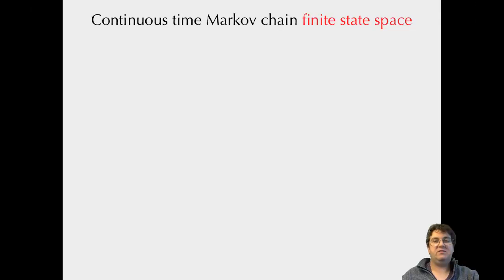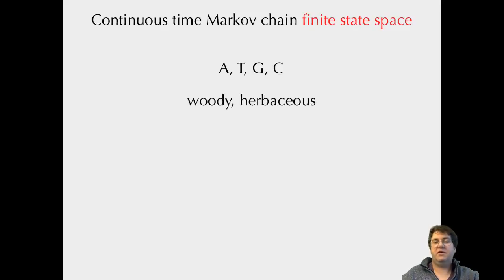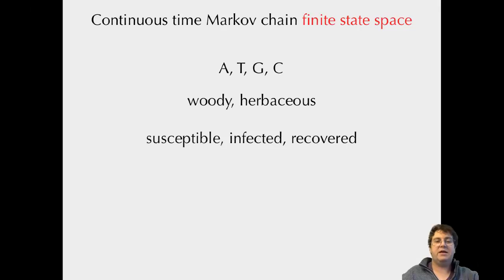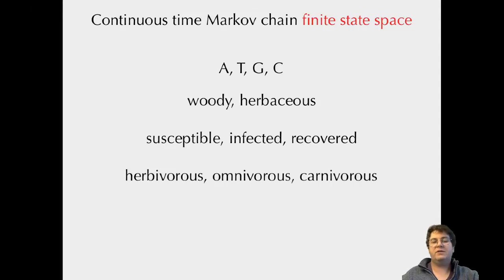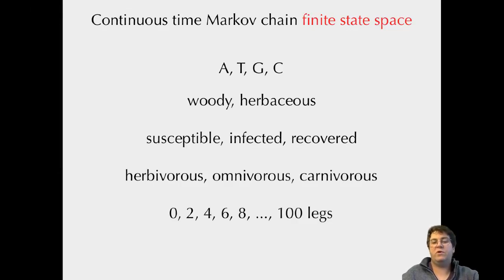Finite state space means we have a small set of states. DNA is a canonical example: A, T, G, or C. Or I could imagine a physiological trait like woody or herbaceous, an infectious disease model with susceptible, infected, or recovered states, dietary states like herbivorous, omnivorous, or carnivorous, or something countable like 0, 2, 4, up to 100 legs.